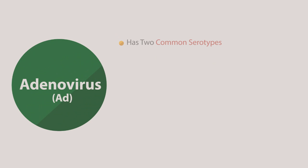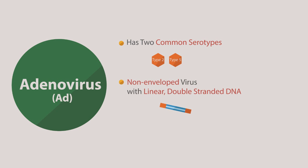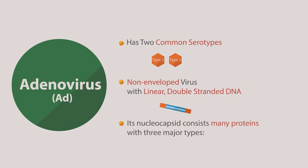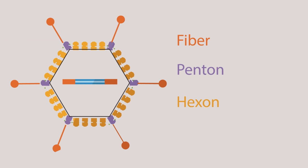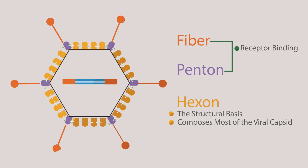Adenovirus, or AD, has two common serotypes: type II and type V. AD is a non-enveloped virus with a linear double-stranded DNA genome. Its nucleocapsid consists of many proteins with three major types: fiber, pentin, and hexin. The hexin is the structural basis of adenovirus and composes most of the viral capsid. Both the fiber and pentin-based proteins are for receptor binding and internalization of the adenovirus into host cells.